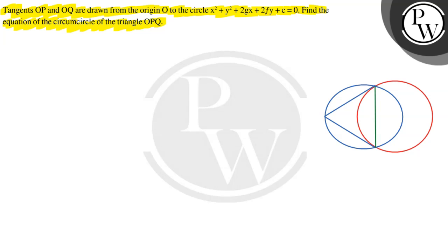Now see the figure carefully. This is our circle x² + y² + 2gx + 2fy + c = 0. The origin point O is at (0, 0). The two tangents drawn are OP and OQ. The blue circle is the circumcircle of the triangle OPQ.